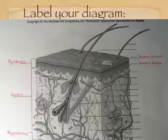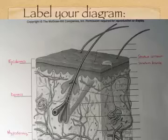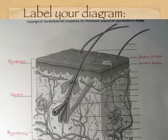Using your diagram, label the epidermis and dermis — those are the top two layers on the left. The hypodermis can be labeled using your book. On the right side of the diagram are two layers of the epidermis we'll look at: the stratum corneum and the stratum basale.